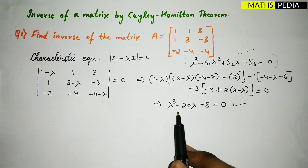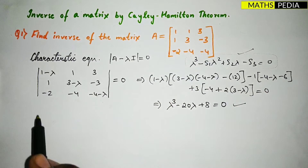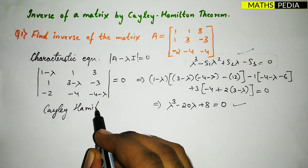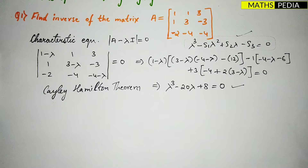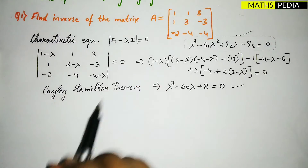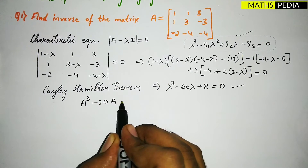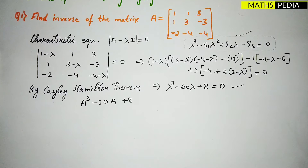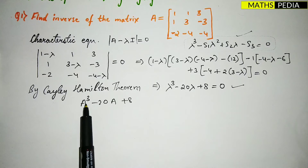After simplifying, the characteristic equation is λ³ - 20λ + 8 = 0. Now we apply the Cayley-Hamilton theorem: every square matrix satisfies its own characteristic equation. Therefore, we can replace λ with the matrix A. Since 8 is a constant, it is replaced by 8I, where I is the 3×3 identity matrix.